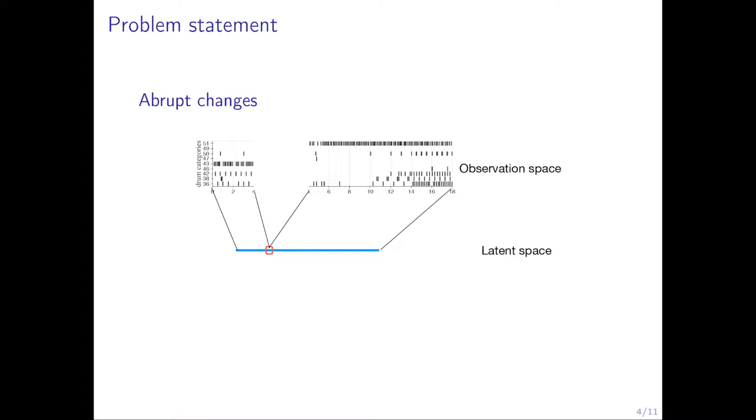However, this kind of generative model often has problems of smoothness in the latent space. For example, here, the left side and the right side, the data are quite different, but they may be close to each other in the latent space. If we interpolate from the left to the right side, we may have abrupt change in the observation space, especially when the training data is missing in this area.